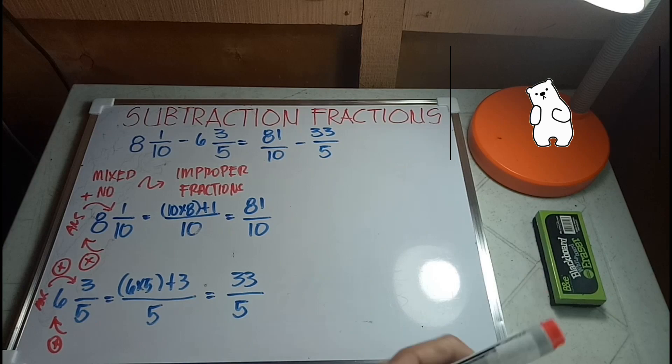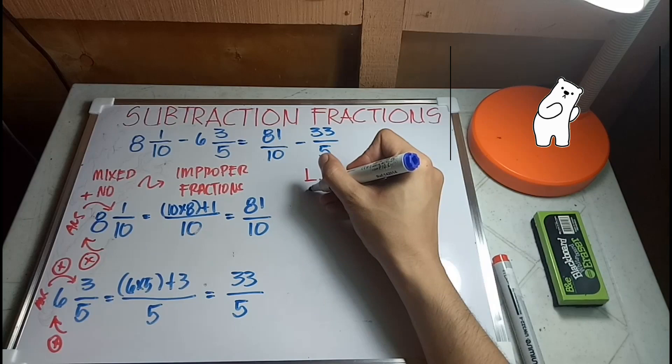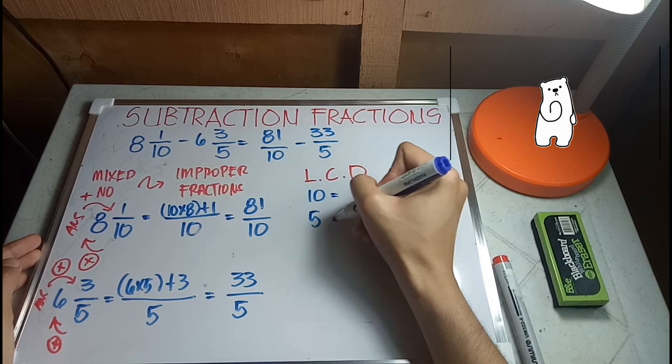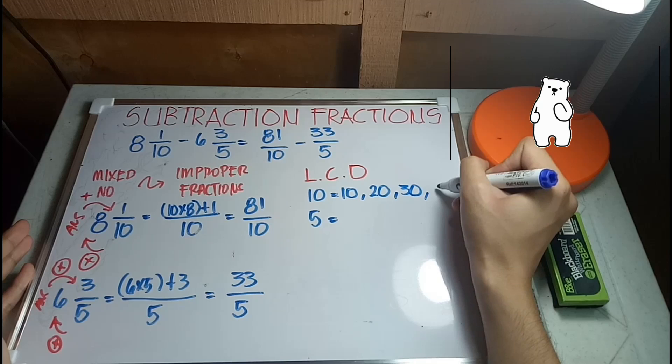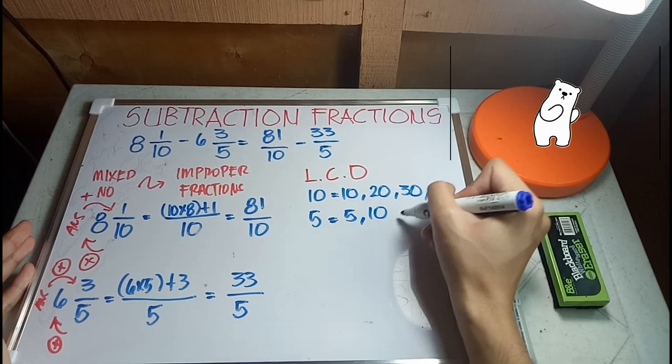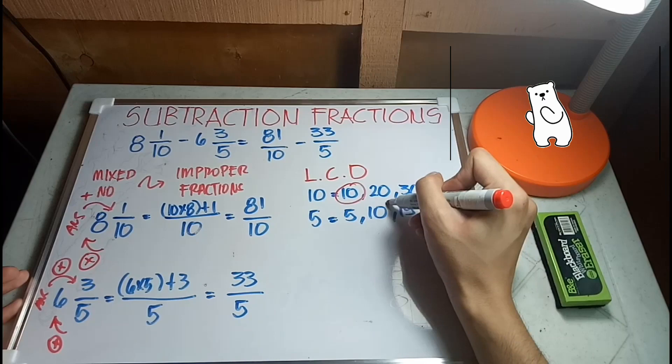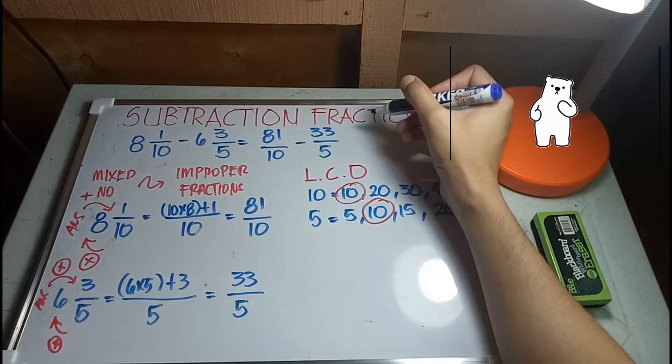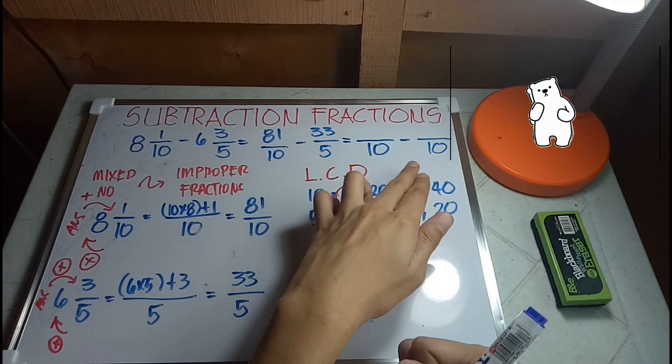Now the second step is we should find the LCD or the least common denominator. What we'll do is like arithmetic progression, copy paste the denominators. So 10, 10 plus 10 is 20, 20 plus 10 is 30, 30 plus 10 is 40. Then we have 5, 5 plus 5 is 10, 10 plus 5 is 15, 15 plus 5 is 20. As you can see, the least common denominator is 10. So 10 will be the new denominator for this set of fractions.